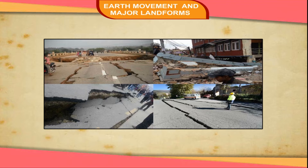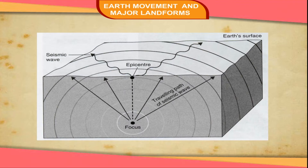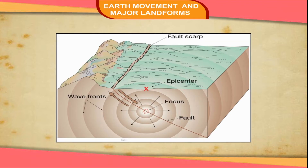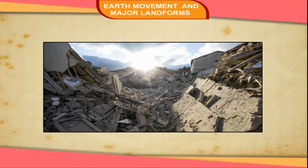The point at some depth below the Earth's surface where the vibrations of an earthquake begin is called the focus. From there, the vibrations begin to spread in all directions, much like the ripples caused by the dropping of a stone into a pool of water. The point on the Earth's surface that lies directly above the focus is called the epicenter. The vibrations reach this point first and then spread outward over the surface. Thus, the epicenter usually suffers the maximum destruction.